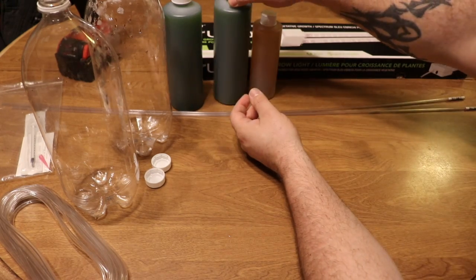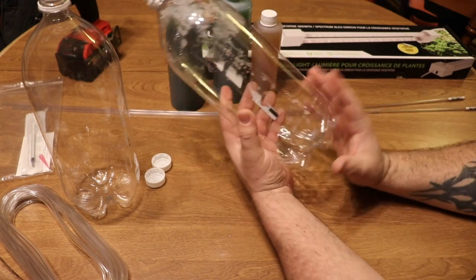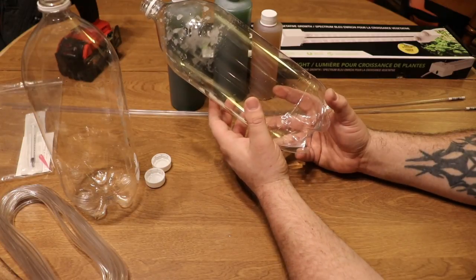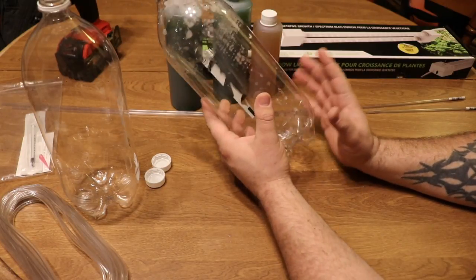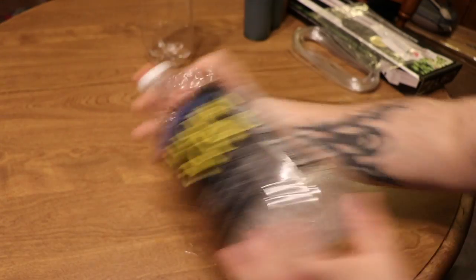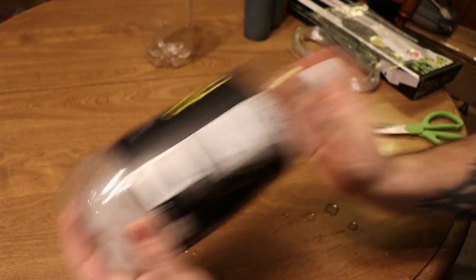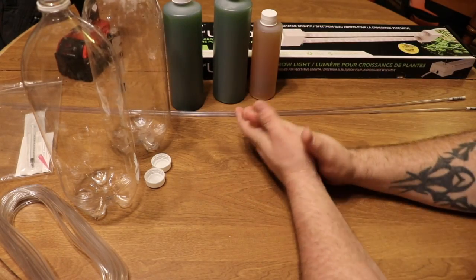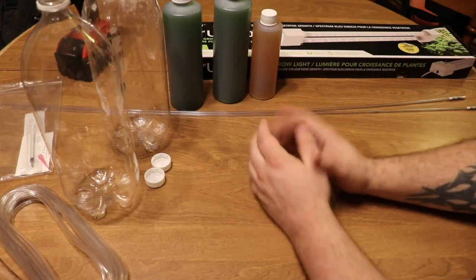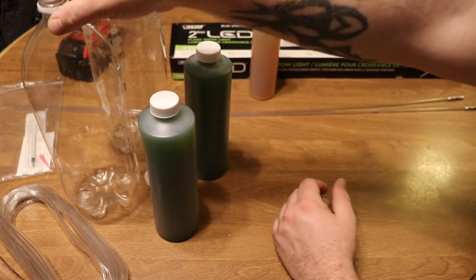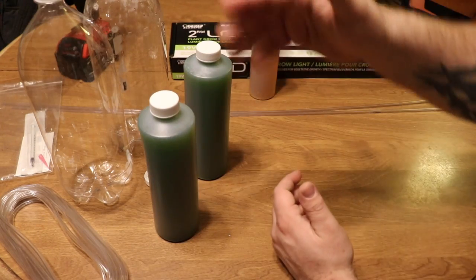I went ahead and got these jugs—they were like lemonade or something. I emptied them out and sterilized the vessels with hot water since I don't have any rubbing alcohol on hand, but that would be the best way to sterilize. What we're going to do is take these two cultures of phytoplankton and put them into these jugs.